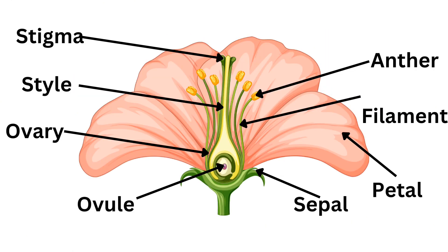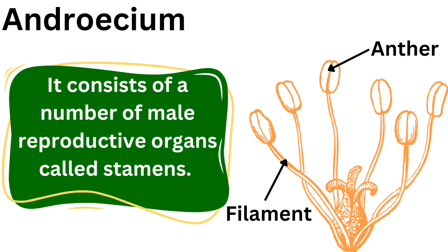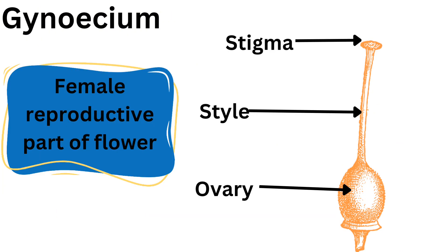Flower is the most attractive and colorful part of the plant. It is the reproductive part of the plant. Let's discuss the four parts of a flower. Androecium is the male reproductive organ. Gynoecium is the female reproductive part of the flower.